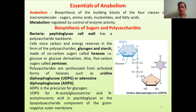Looking at the structure: a hexose ring is linked via a 2-phosphate linkage to a pentose ring, with adenine attached — that is the structure of uridine diphosphoglucose. ADPG is the precursor of glycogen. UDPG is the precursor of N-acetylglucosamine and N-acetylneuraminic acid, which are major components of the bacterial cell wall — the peptidoglycan — and also form polysaccharides that are components of gram-negative bacteria.